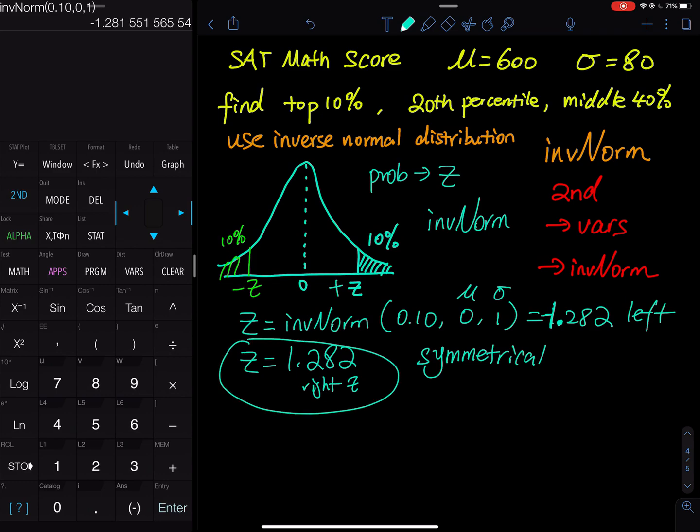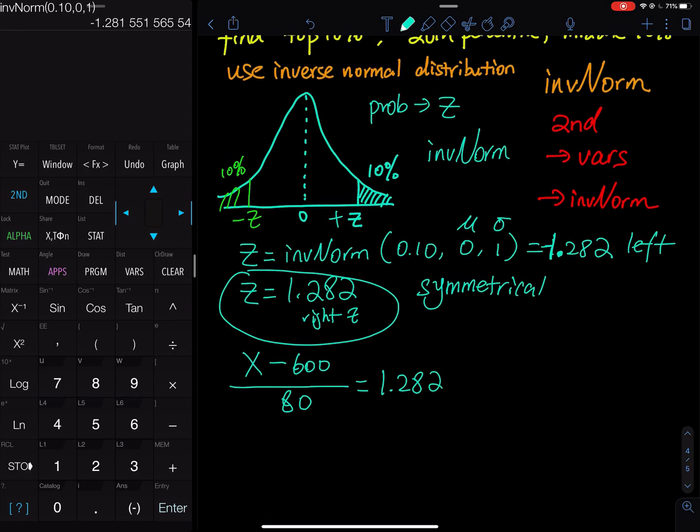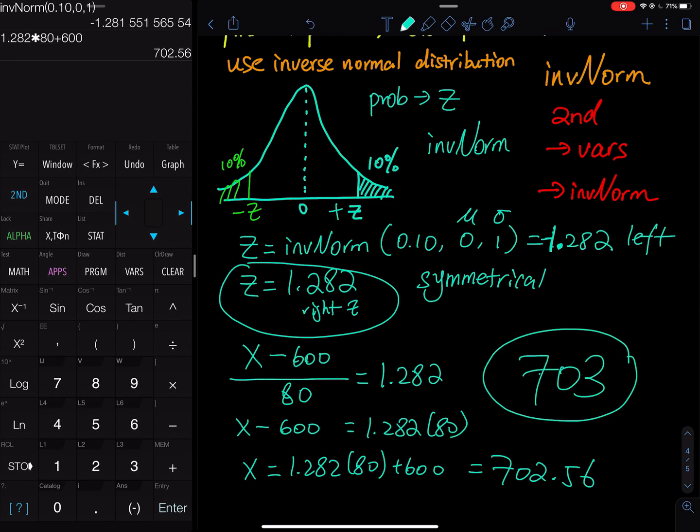This is the Z that we want. Of course, that's not my answer - SAT score can't be one point. Then you undo the standardization. You take X minus the mean divided by standard deviation equals Z. Then you solve this linear equation. First, you multiply both sides by the denominator. 1.282 times 80. The left-hand side, you have X minus 600. Then X equals 1.282 times 80, and you add 600 to it. So that equals to the score you need to be the top 10 percent. 1.282 times 80, then you add 600 to it. That equals 702.56. I'll just round this to 703 points. So if you want to be the top 10 percent, you need 703 points or above.